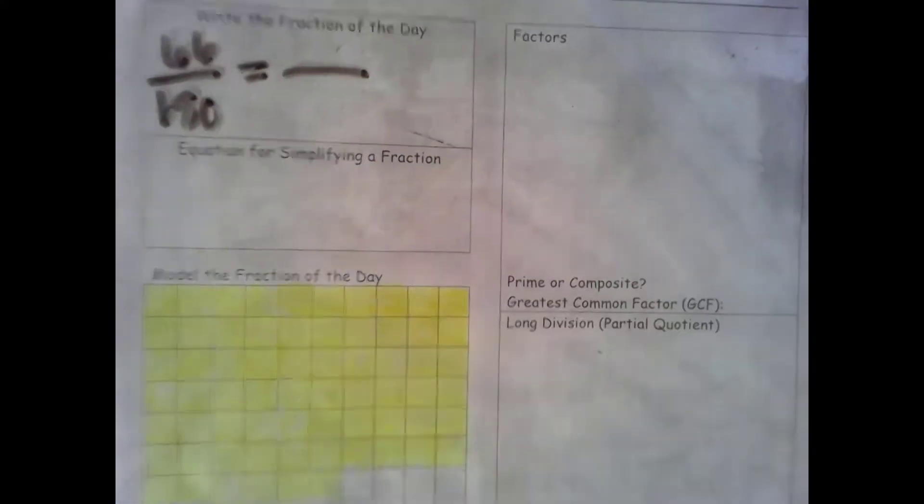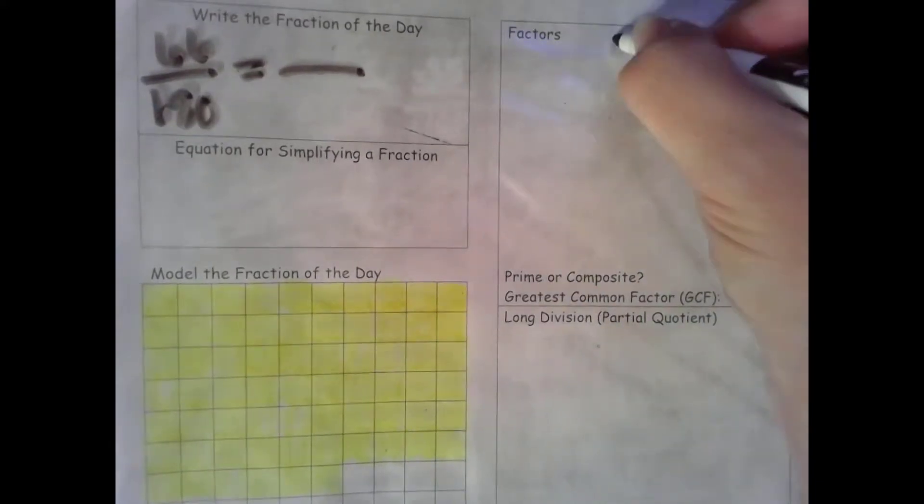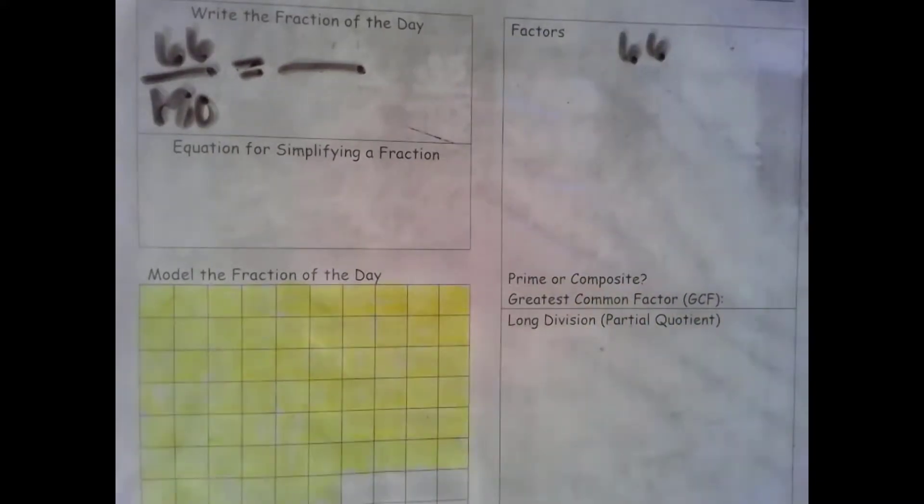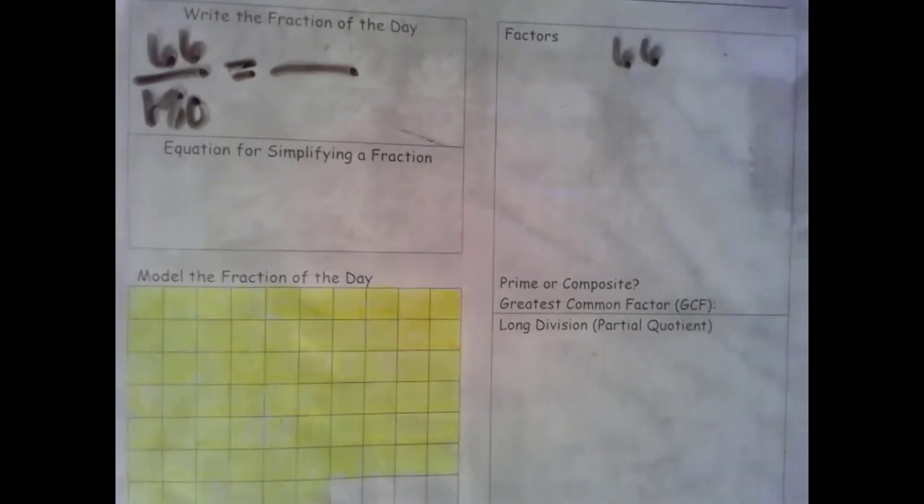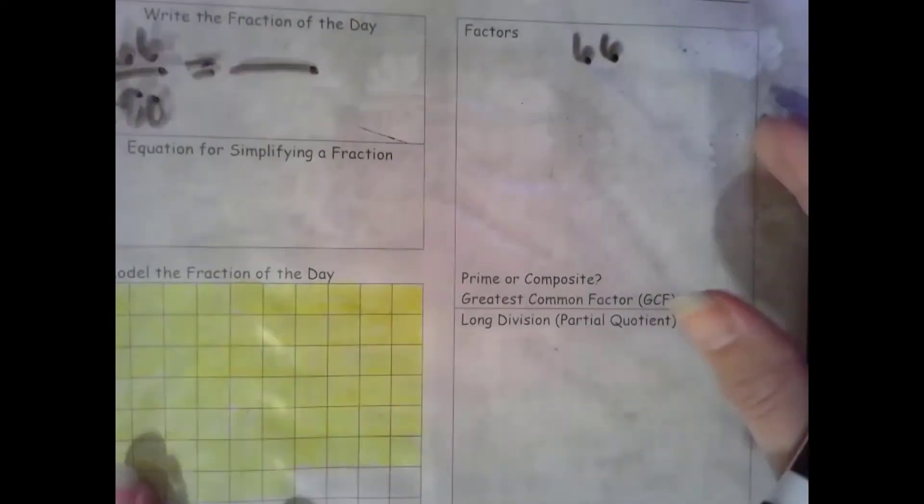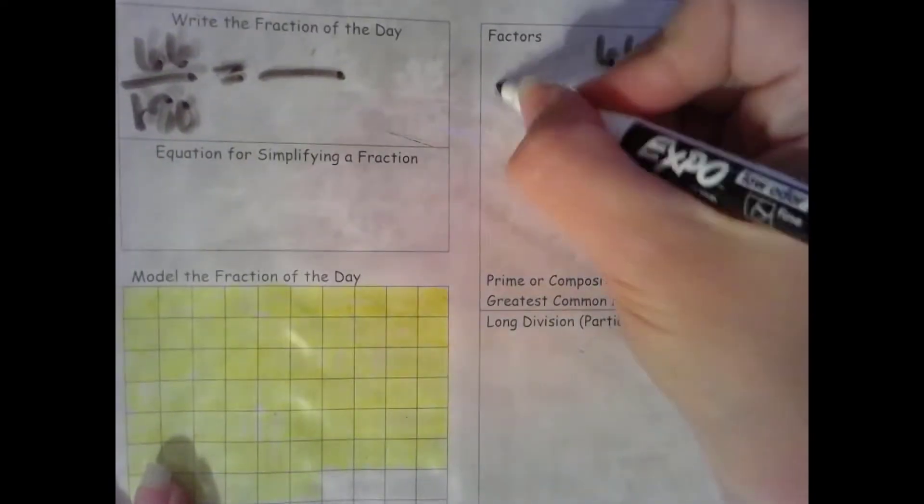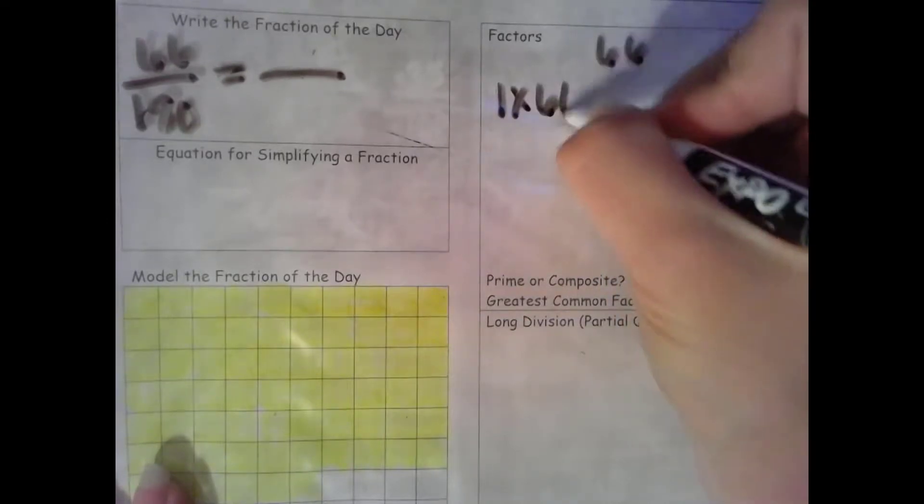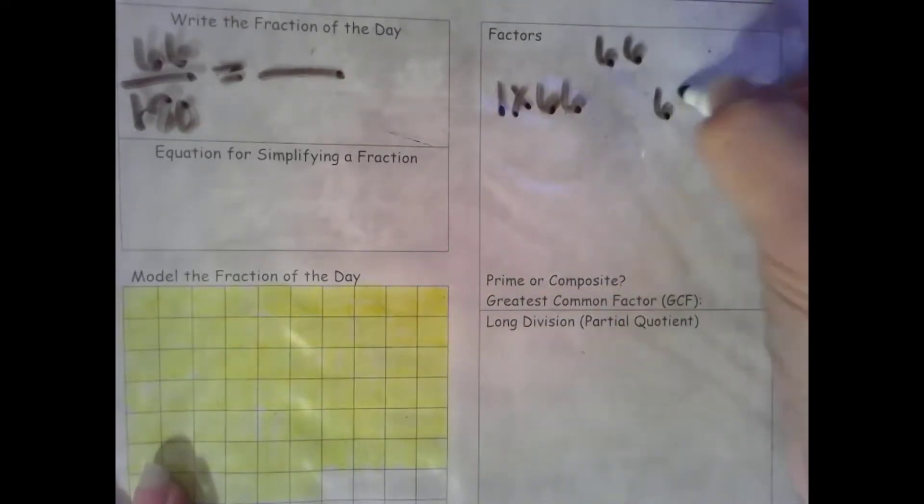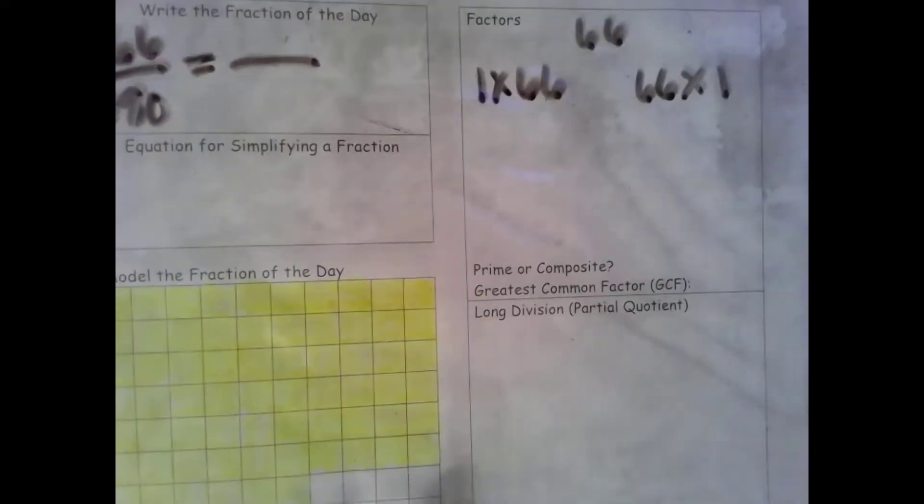Let's find the factors of our numerator of 66. Two factors we always know are 1 and the number itself. So I can write down 1 times 66 and then the commutative property of multiplication I can write down 66 times 1.